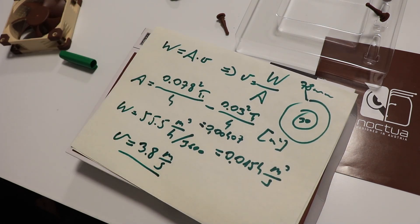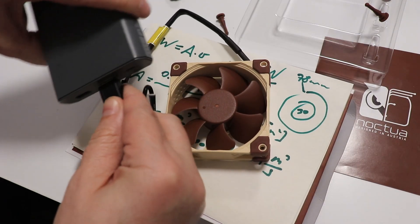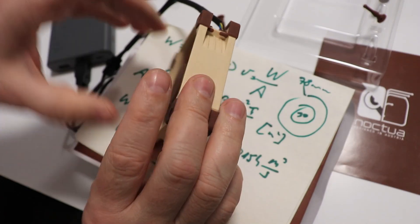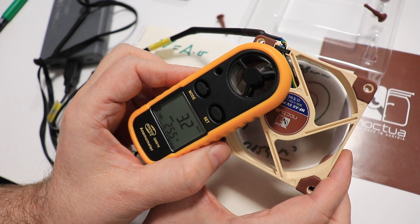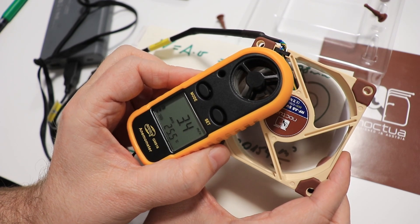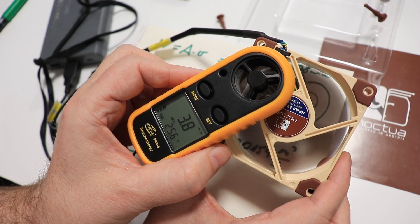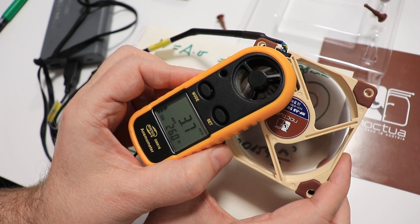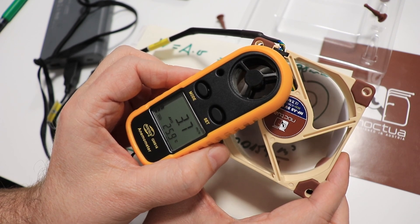Now I can measure. I will power it from this power bank. And this is the average value of last 2 seconds, so that's why I have to wait until it's stabilized. And around 3.7 to 3.8 meters per second is stabilized. So this means these three things are correct together: my calculation, the anemometer, and the Noctua.